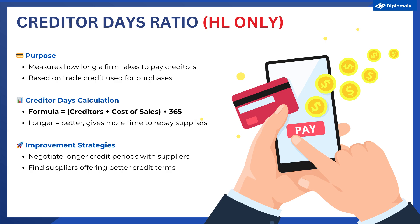The longer the creditor days ratio, the better for the business, as it means they have a longer credit period and therefore longer to pay back their creditors. To improve the creditor days ratio, firms can negotiate an extended credit period with their suppliers, or in a more extreme case, seek alternative suppliers that offer better credit terms. This allows the business to be more flexible in how it uses its cash, because it gets to keep this cash for longer.